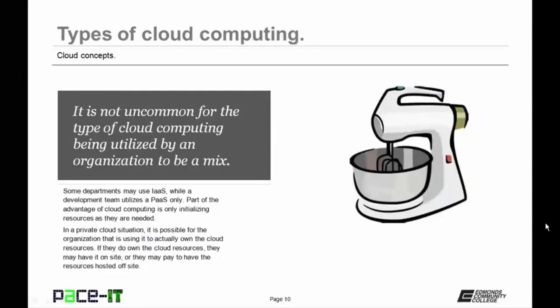It is not uncommon for the type of cloud computing used by an organization to be a mix of different types — some departments may use IaaS while a development team only utilizes PaaS. Part of the advantage of cloud computing is only initializing resources as they are needed. In a private cloud situation, it is possible for the organization to actually own the cloud resources, either on their own site or hosted off-site.